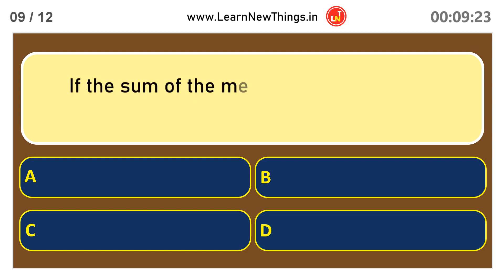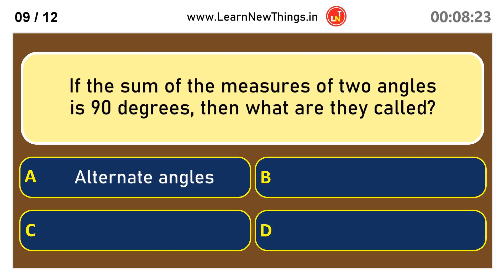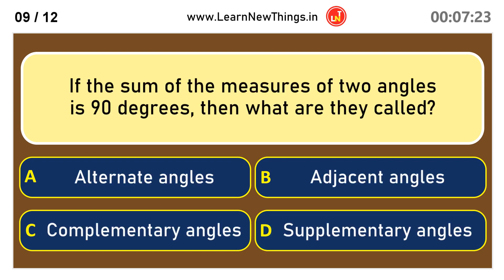If the sum of the measures of two angles is 90 degrees, then what are they called? Complementary Angles.